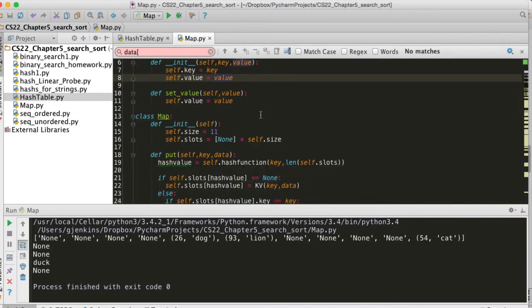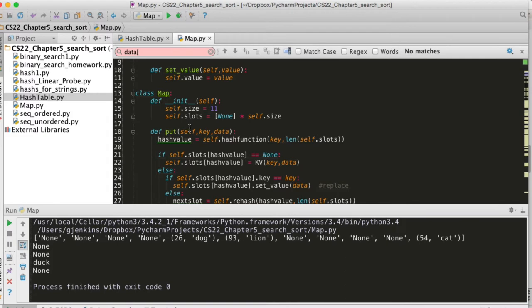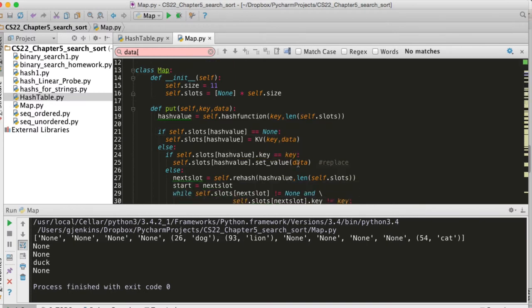So the big difference here is everywhere we're setting data, for example put, if the slot is empty, we create a new object which has the key and the data and we store it. And you'll see that goes all the way through. And if we're changing the data, we call set_value on the slot, and it will set the data for an existing one.